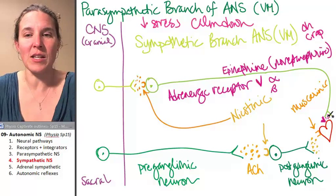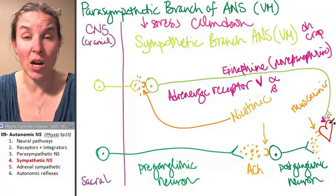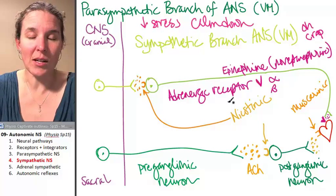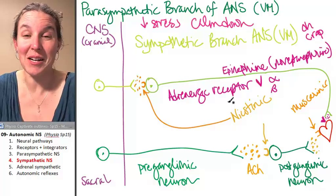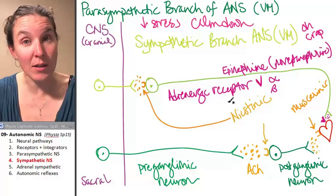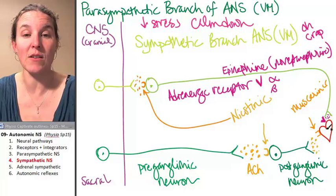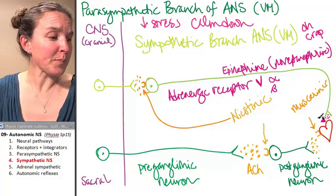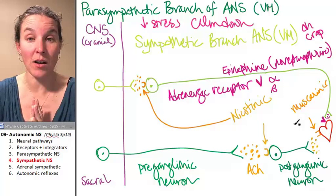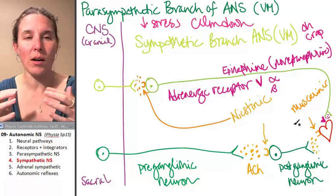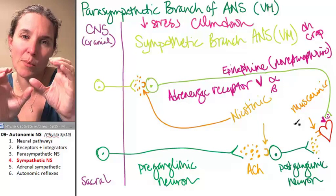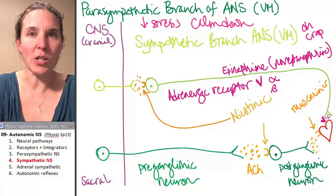We'll see all of these when we do blood pressure. We're going to talk about beta blockers, which are drugs that block beta adrenergic receptors. If that's a blood pressure-lowering medication, you can imagine where you might see those and what the effect might be. I think that's everything you need to know about the sympathetic branch. There's one more branch that's a bit vague and probably should be grouped with the sympathetic branch, so we'll talk about that one next.